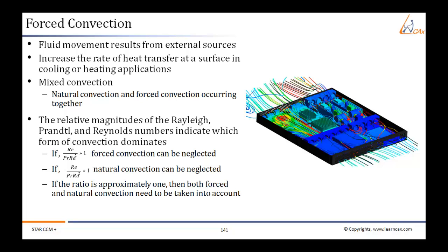In forced convection, fluid movement results from external sources, for example a fan, pump, or the action of a propeller. It is typically used to increase the rate of heat transfer at a surface in cooling or heating applications. In cases of mixed convection, that is natural convection and forced convection occurring together, you can determine how much is due...